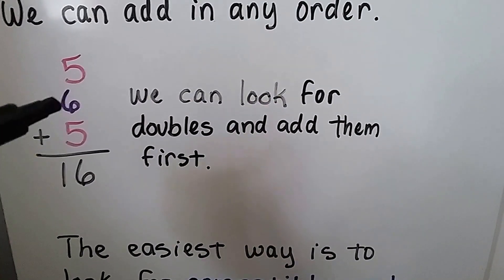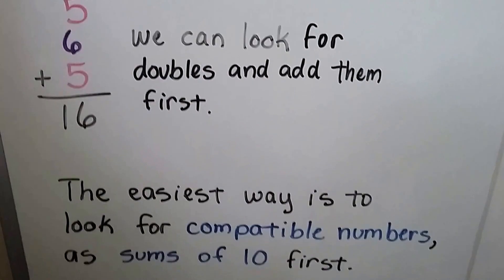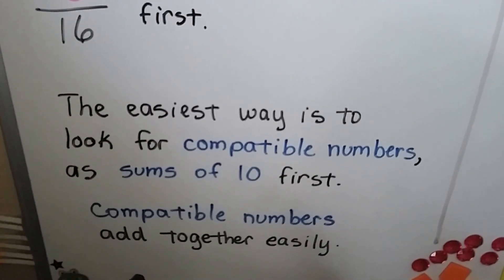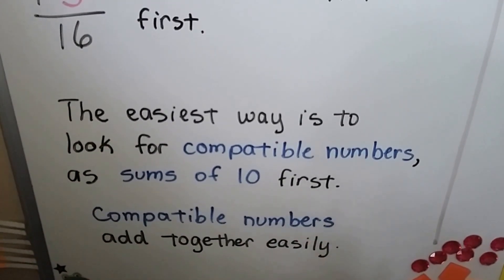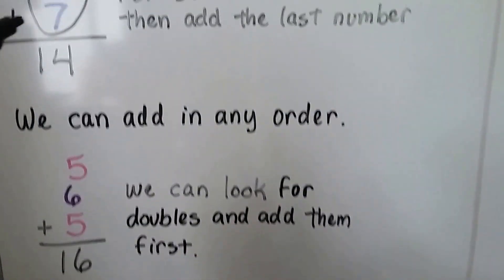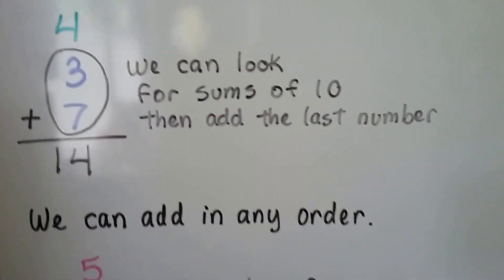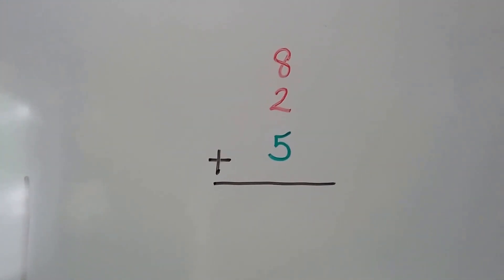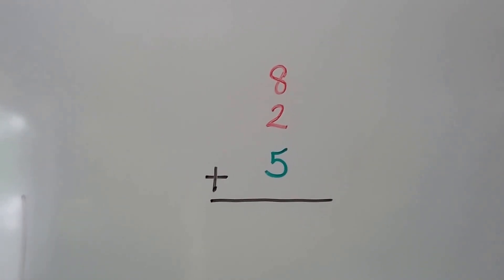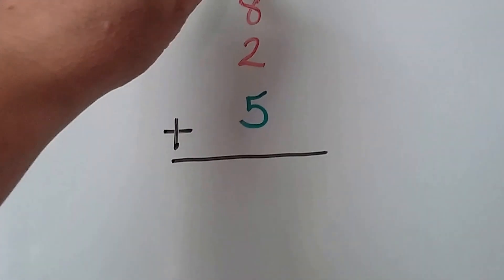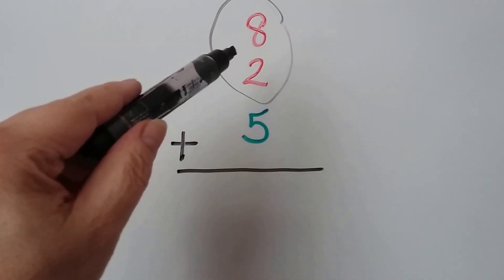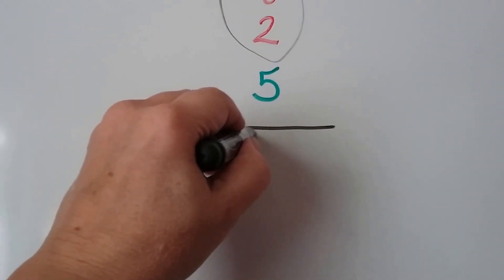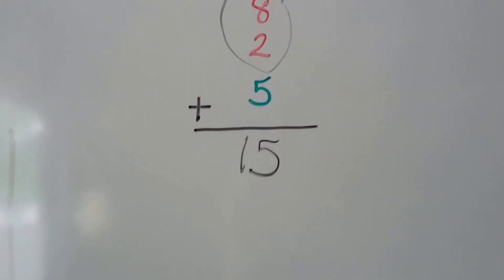We can look for doubles and add them first — like a five and a five, we know that's ten, then add the six to get sixteen. The easiest way is to look for compatible numbers as sums of ten first. Compatible numbers add together easily — they're friendly with each other, like the seven and the three, because they make a ten. So let's try this: eight plus two plus five. Do you see some compatible numbers that make a ten?